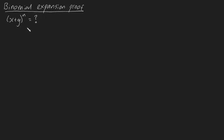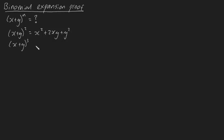Before I get started, I just want to allude to the fact that you probably know how to solve this already for small values of n. For example, I'm sure you'd be able to figure out x plus y to the power of 2 — that's just x squared plus 2xy plus y squared. Likewise, x plus y to the power of 3 will be x cubed plus a whole bunch of stuff in the middle plus y cubed. But the whole point of this is to figure out a generalized expression for x plus y to the power of n, and that's the purpose of this video.